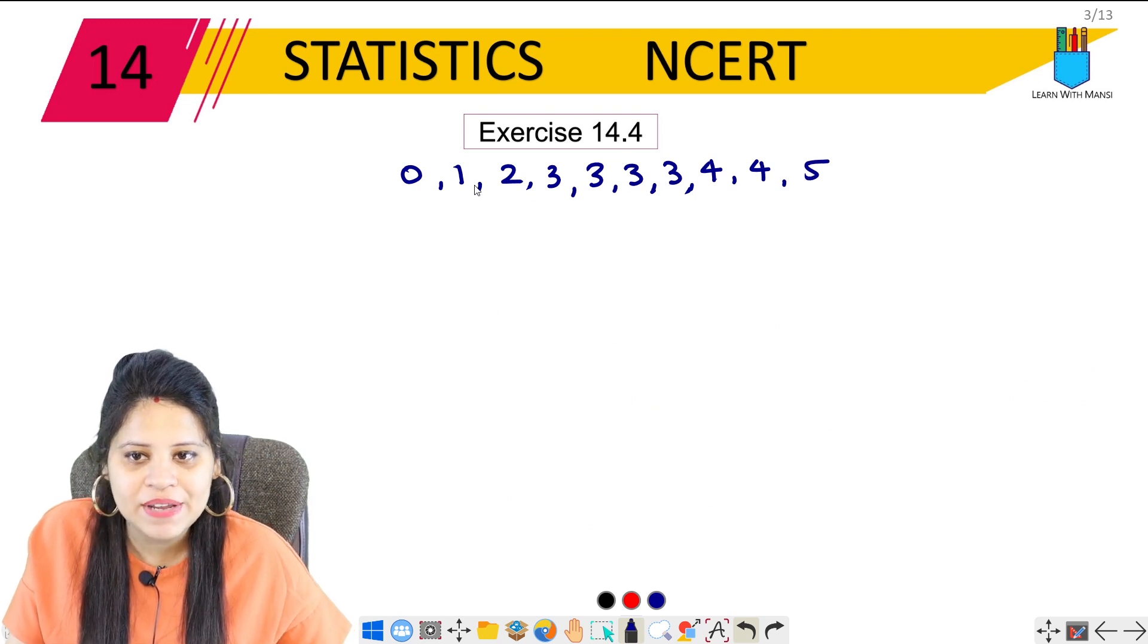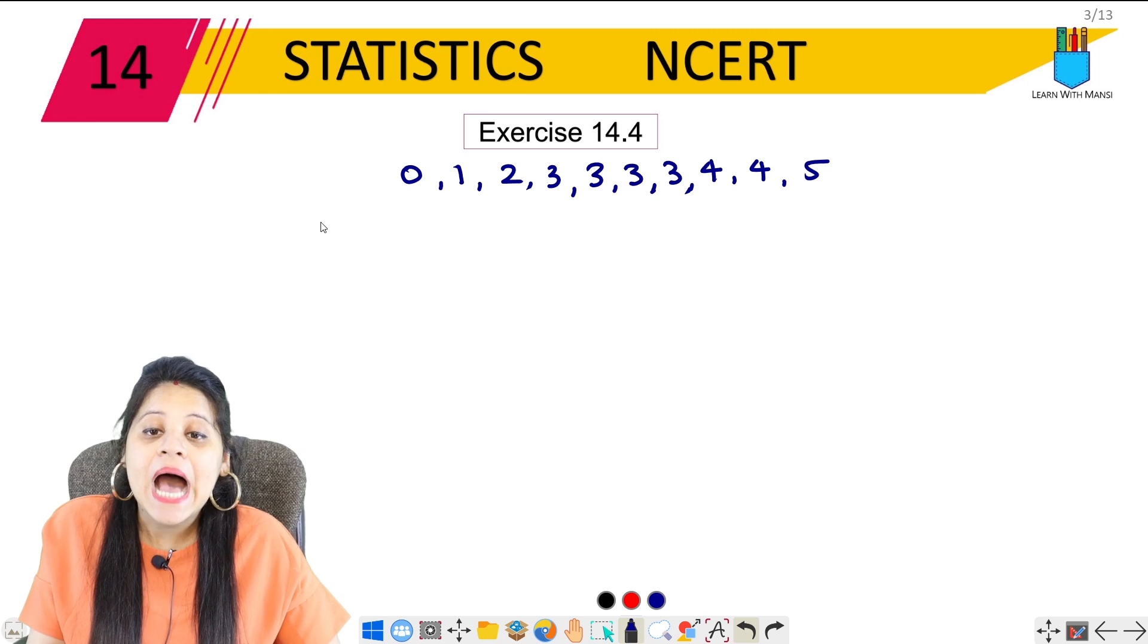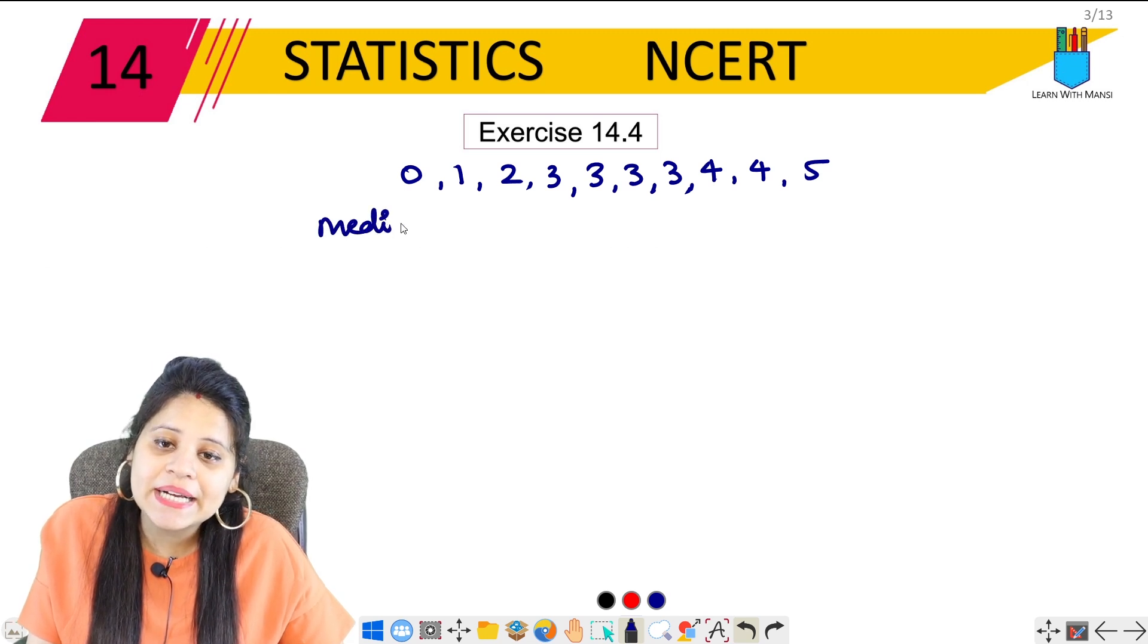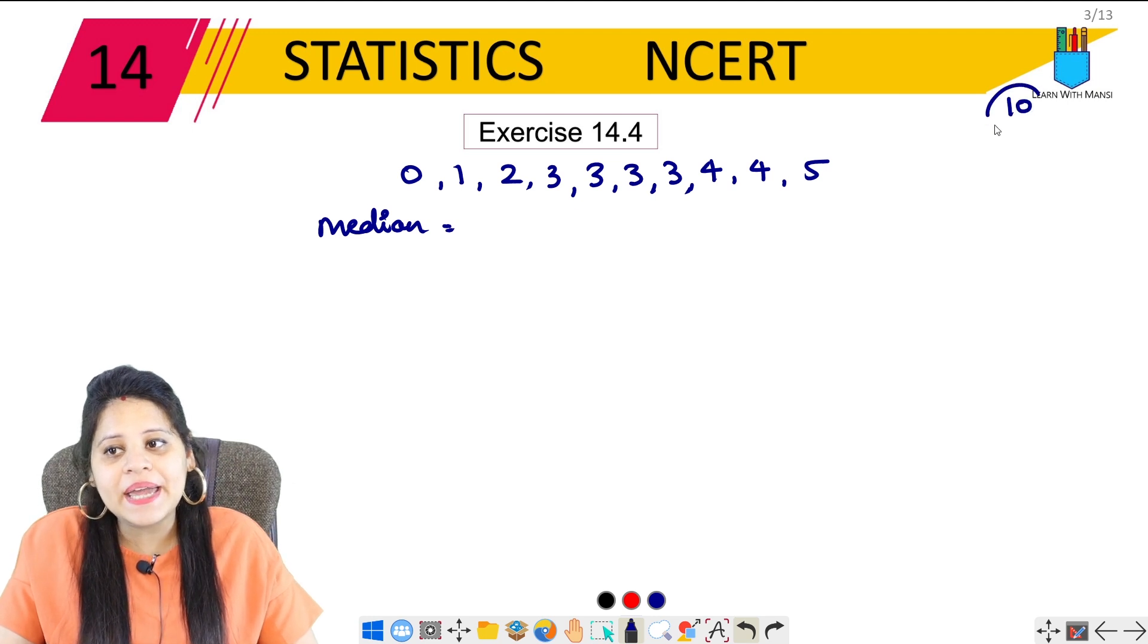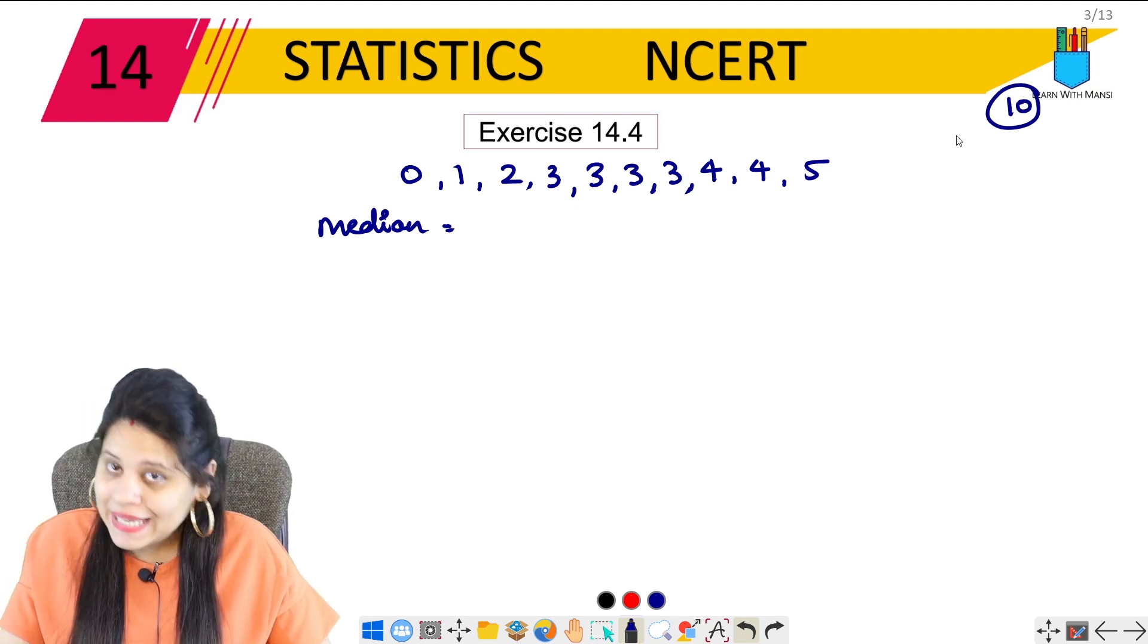We have to count: 1, 2, 3, 4, 5, 6, 7, 8, 9, 10. Now we have to check the median. What is that? Even or odd? How much total number? 10 means even.